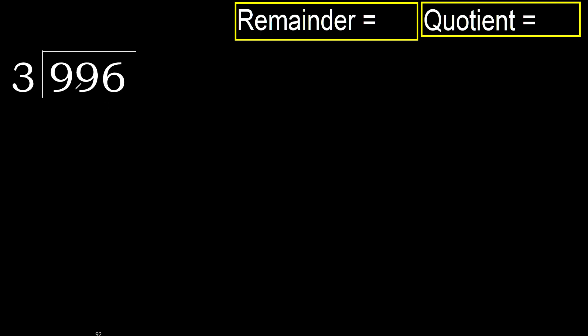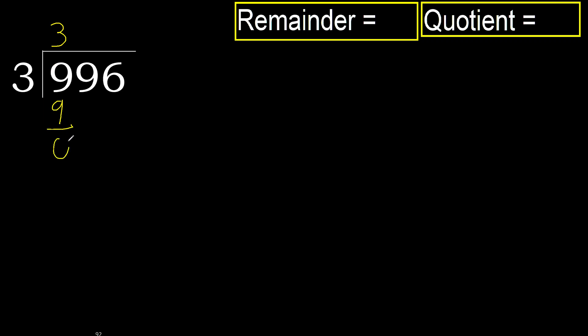996 divided by 3. 9 is not less, therefore start with 9. 3 multiplied by which number is nearest to 9 but not greater? 3 multiplied by 4 is 12 — 12 is greater. Multiply by 3: 9 is not greater. Subtract: 9 minus 9 equals 0.